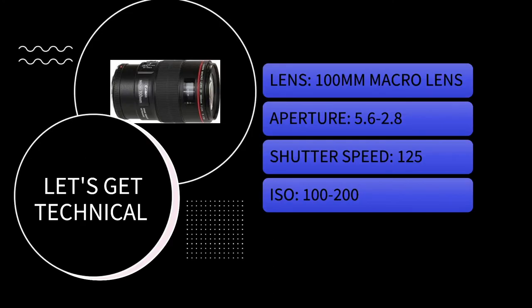So this was my technical information: I used a 100 millimeter macro lens, my aperture ranged from 5.6 to 2.8 depending on where I was standing. The time of day is also really important — I did my photo shoot around 8:30 to 9 a.m. this morning. I shot on manual, with the aperture range between 5.6 and 2.8 depending on the sun. My shutter speed was 125, however reflecting back I think I should have played around with that shutter speed more, especially when photographing the bee.